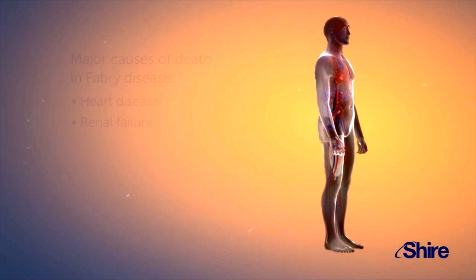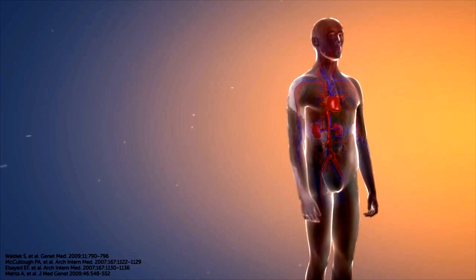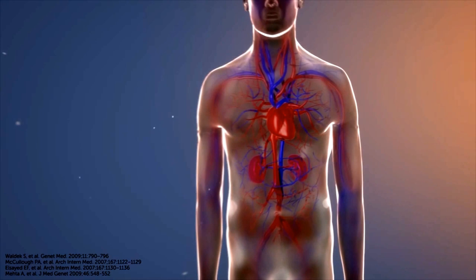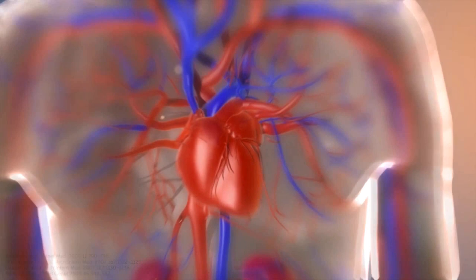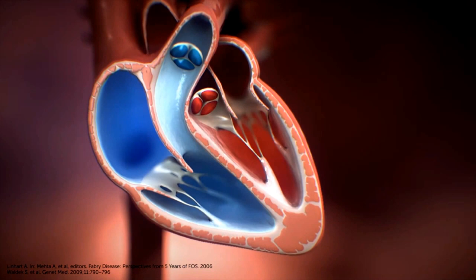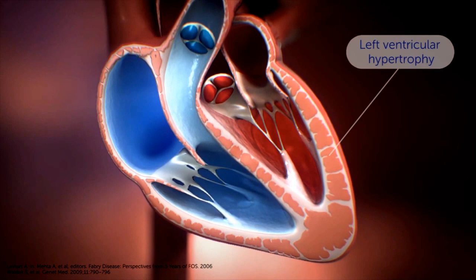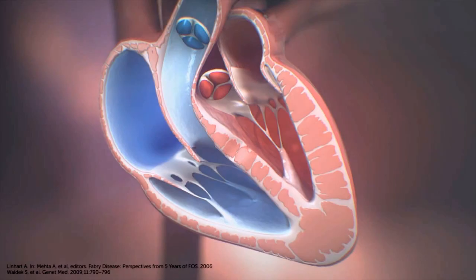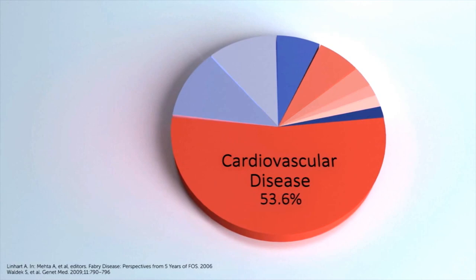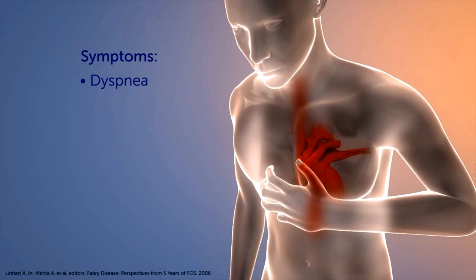Heart disease and renal failure are both major causes of premature mortality in patients with Fabry disease. This challenge is complicated further by the impact of these two morbidities on each other. Cardiac involvement is common in Fabry disease, as lysosomal storage occurs within almost all cardiac tissue, leading to progressive structural and functional changes to the heart. In over half of male and a third of female patients, cardiovascular events are the cause of death in over 50 percent of patients with Fabry disease. Symptoms include dyspnea, heart failure, angina, chest pain, and arrhythmia.